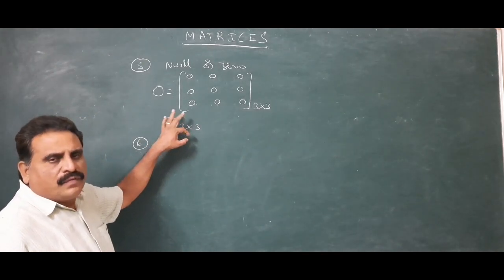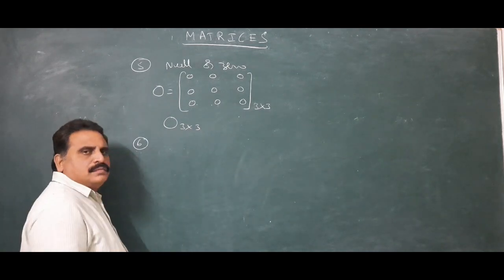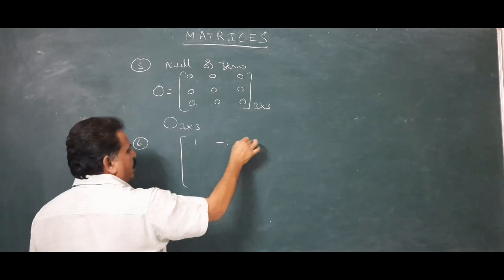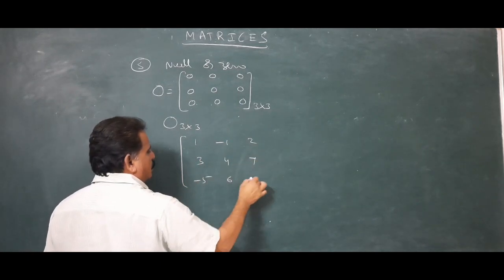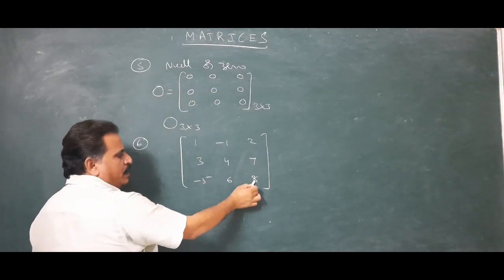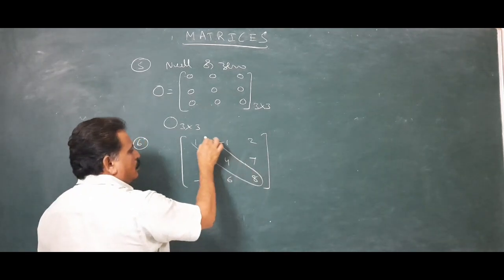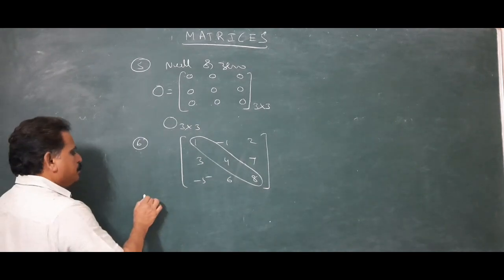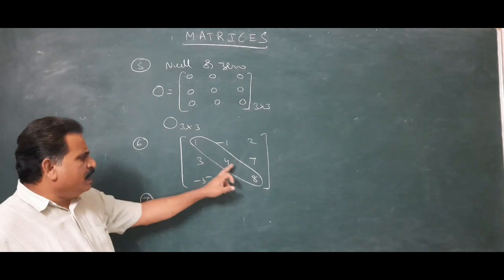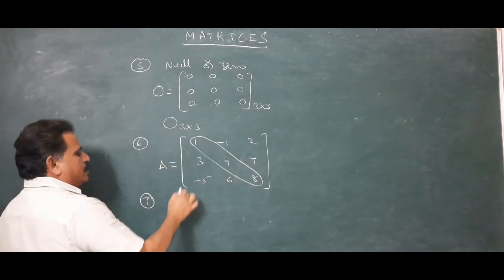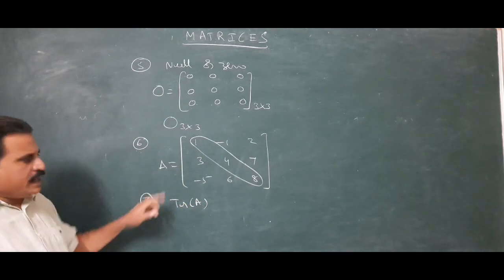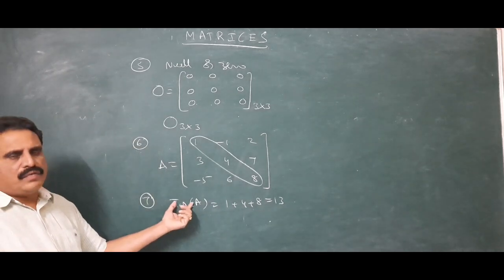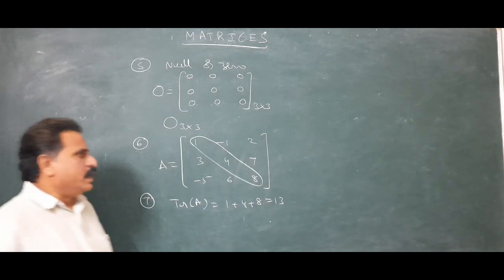In a square matrix, the line joining the first element and the last element is called the principal diagonal. For example, in a 3 by 3 matrix [1, -1, 2; 3, 4, 7; -5, 6, 8], the elements 1, 4, 8 lie on the principal diagonal. The sum of all elements in the principal diagonal is called the trace of the matrix, denoted by tr(A). For this example, trace equals 1 plus 4 plus 8, which is 13.